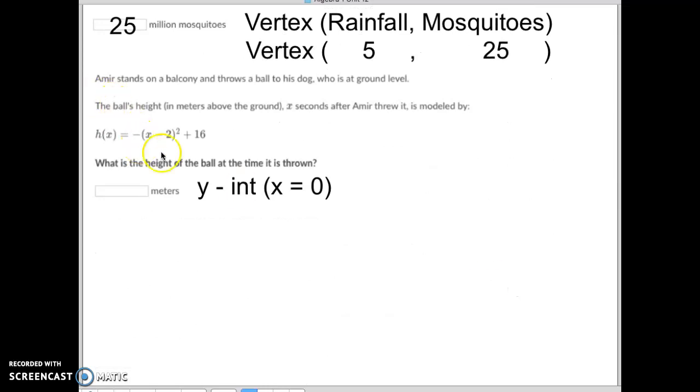Then finally, if they want this one, where they want the y-intercept, the initial spot, what was the height of the ball when it was first thrown? Well, we plug in zero for x. We're going to take this equation right here. We're going to plug in zero for x right here, and we simply solve. Zero minus two is negative two. Negative two squared is four. So that's where the four came from. The opposite of four is negative four. Negative four plus 16 is 12. So our height in meters was 12 meters when that ball was originally thrown.